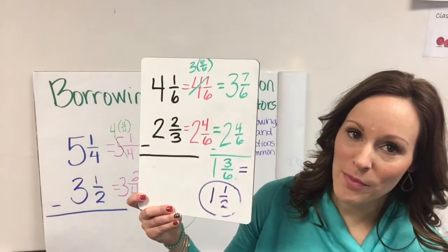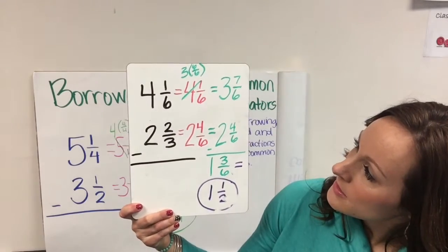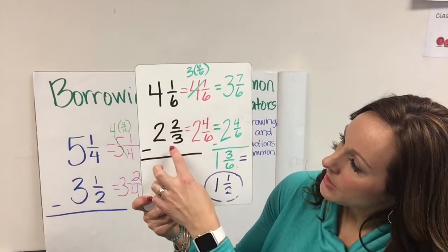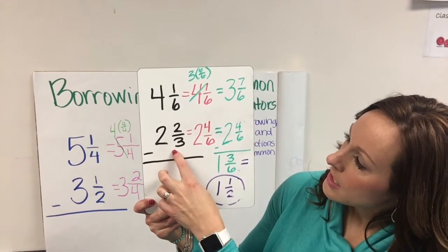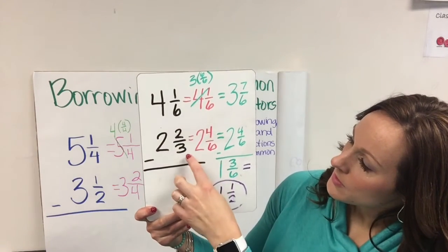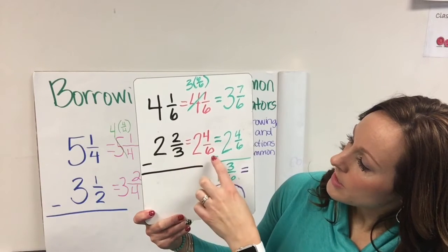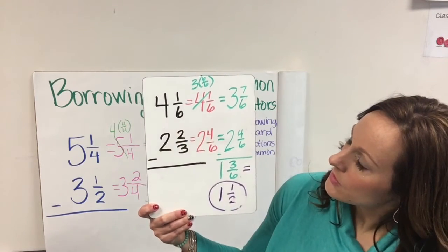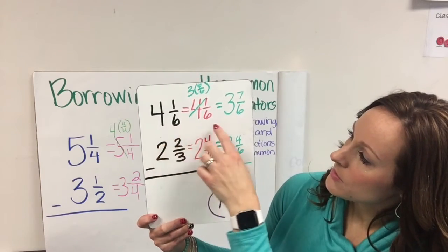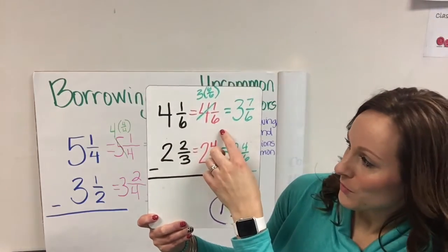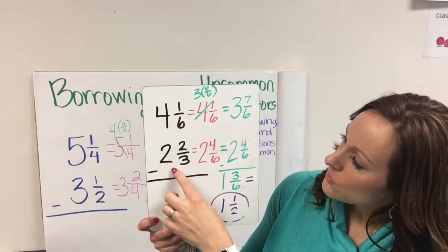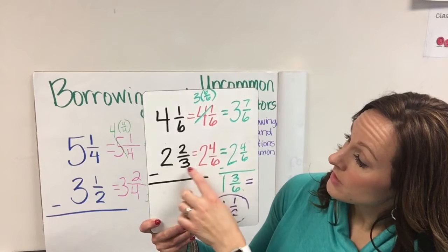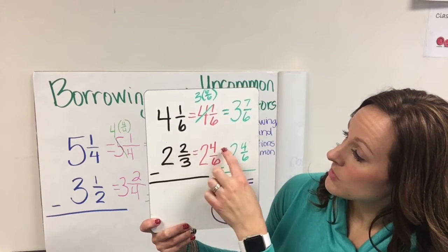I'm going to show you another problem that's similar, and I did the same thing — used different colors for each step. So in this problem, I have 4 and 1 sixth minus 2 and 2 thirds. I can't work with 6 and thirds, so I had to make common denominators, and my common denominator was 6. So I carried 4 and 1 sixths over here. And 2 and 2 thirds I converted into 2 and 4 sixths, because 3 times 2 is 6, and 2 times 2 is 4.